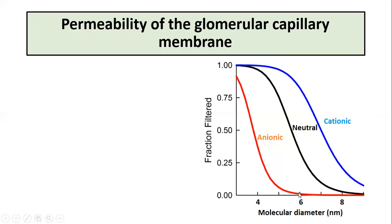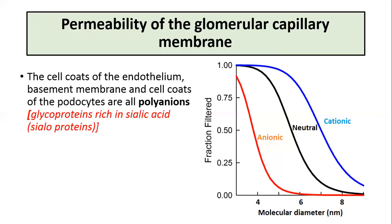The reason for least permeability to anionic particles is that the cell coats of the filtration membrane — the endothelium, basement membrane, and the cell coats of the podocytes — are all polyanions, which are negatively charged. They are glycoproteins rich in sialic acid, called CLO proteins, and they repel anionic substances between the diameter of 4 to 8 nanometers.